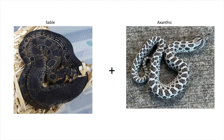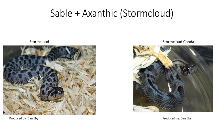Now we're going to start doing the sable combinations with recessive genes. The first recessive gene is the xanthic, which removes yellows, oranges, and reds, leaving you with gray, black, and white. When you combine sable and xanthic you get what's called a storm cloud — babies that actually have a bluish tint when they're born, which kind of goes away as they get older. We have the storm cloud as well as the storm cloud conda. From my research, a storm cloud super conda has not been produced, and the arctic gene hasn't been included in the storm cloud yet — these are the only two combinations released so far by Dan Eby.